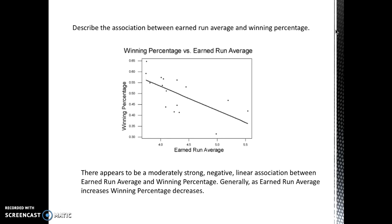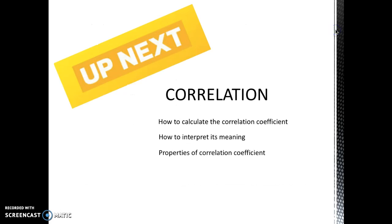Don't get too hung up on 'moderately strong' or 'moderately weak' — you're just describing the overall strength that you see. Up next, we're going to talk about correlation, which will give us a more concrete way to determine if we have a moderately strong or strong relationship. We'll also learn how to calculate the correlation coefficient, how to interpret its meaning, and discuss some properties of the correlation coefficient.